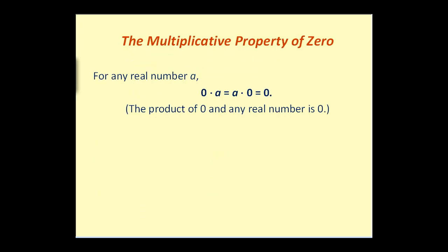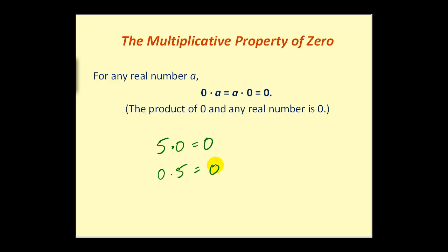The next idea is the multiplication property of 0. For any real number A, 0 times A equals A times 0, which equals 0. The product of 0 and any number is going to be 0. So 5 times 0 is 0, and 0 times 5 is equal to 0.